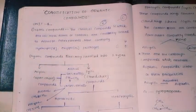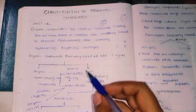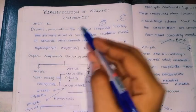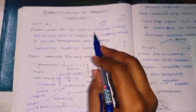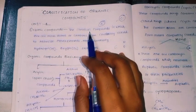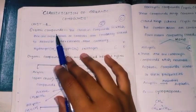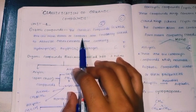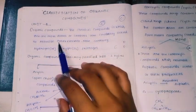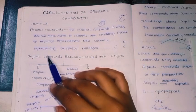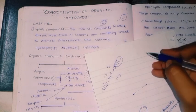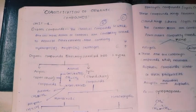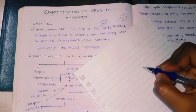So for the five-mark question, if you do classification of organic compounds, the first question will be the definition. The definition carries one mark. Chemical compounds in organic chemistry are defined as compounds in which one or more atoms of carbon are covalently linked to atoms of other elements — most commonly hydrogen, oxygen, and nitrogen. These are known as organic compounds.